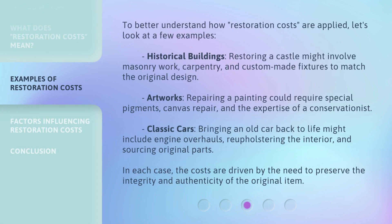To better understand how restoration costs are applied, let's look at a few examples. Historical Buildings: restoring a castle might involve masonry work, carpentry, and custom-made fixtures to match the original design. Artworks: repairing a painting could require special pigments, canvas repair, and the expertise of a conservationist. Classic Cars: bringing an old car back to life might include engine overhauls, reupholstering the interior, and sourcing original parts. In each case, the costs are driven by the need to preserve the integrity and authenticity of the original item.